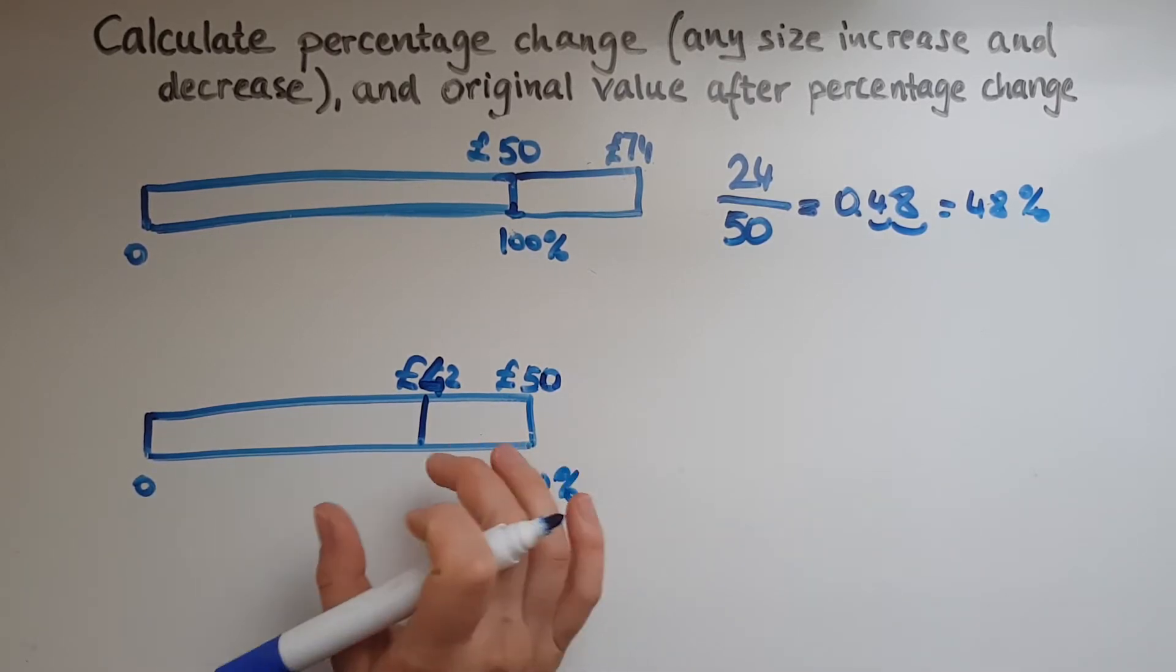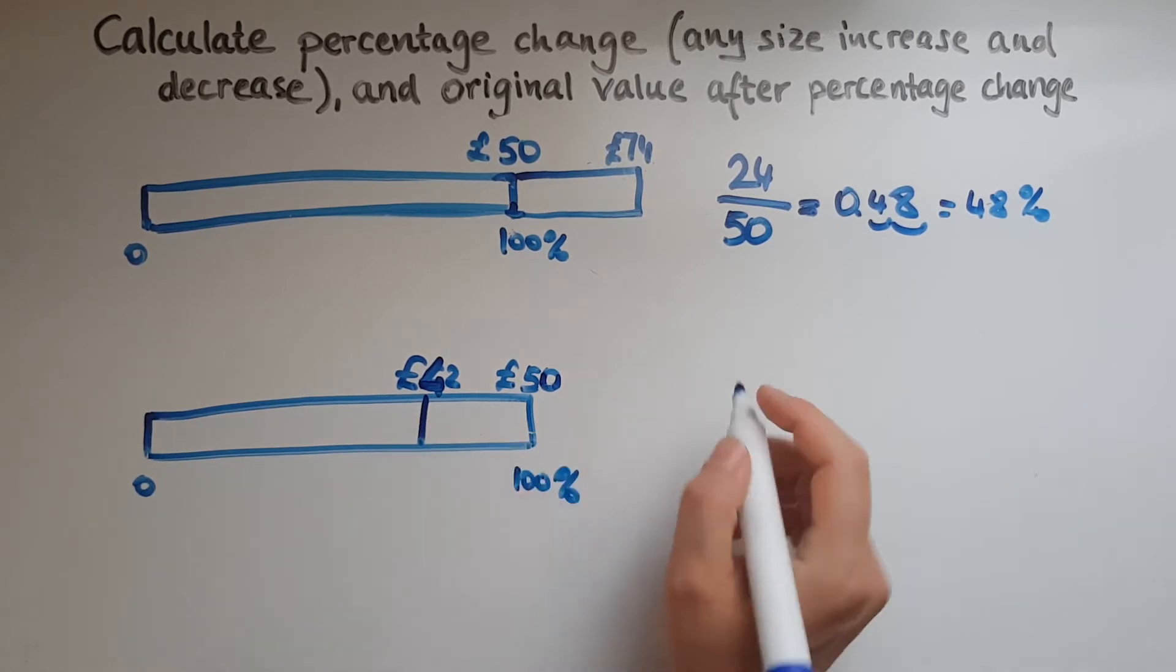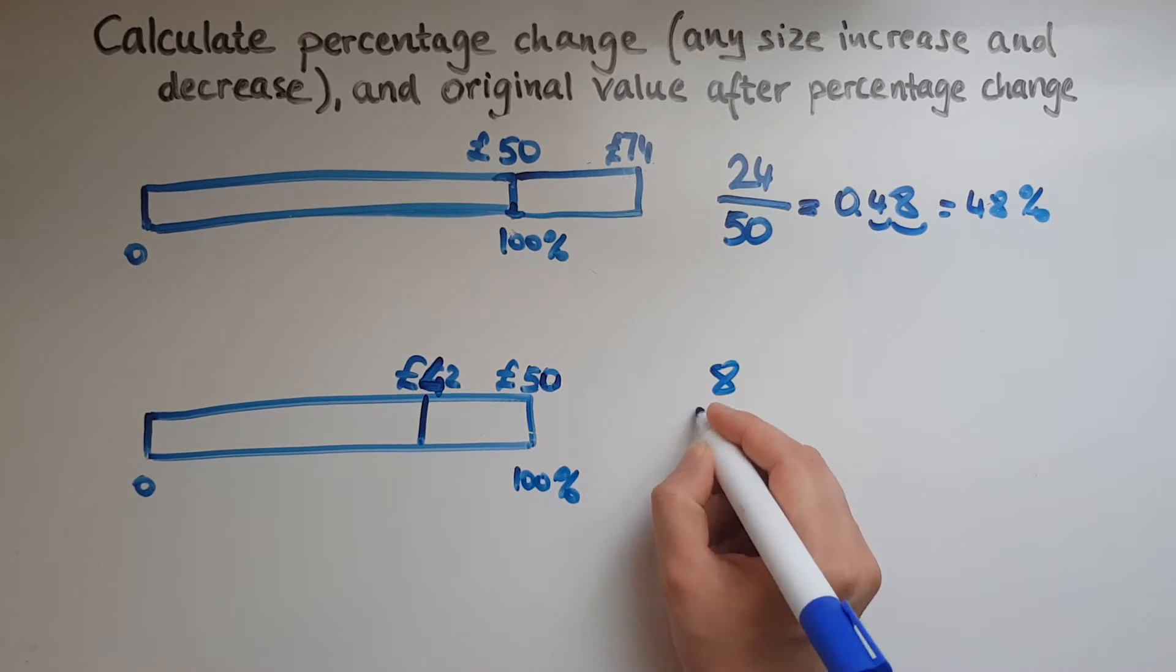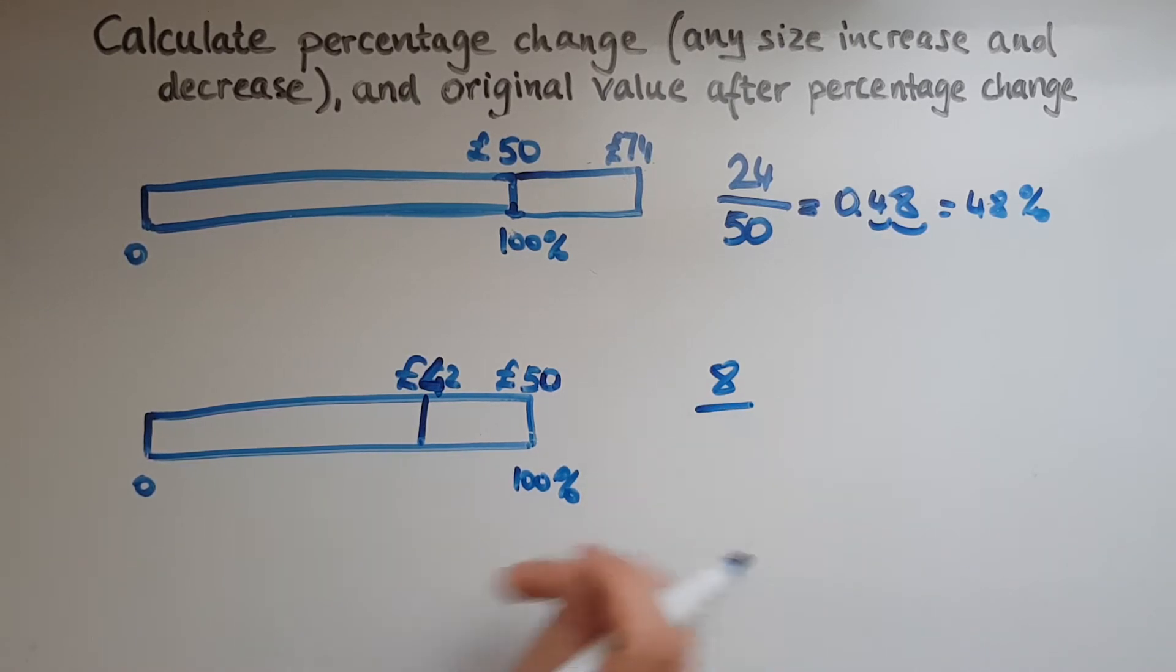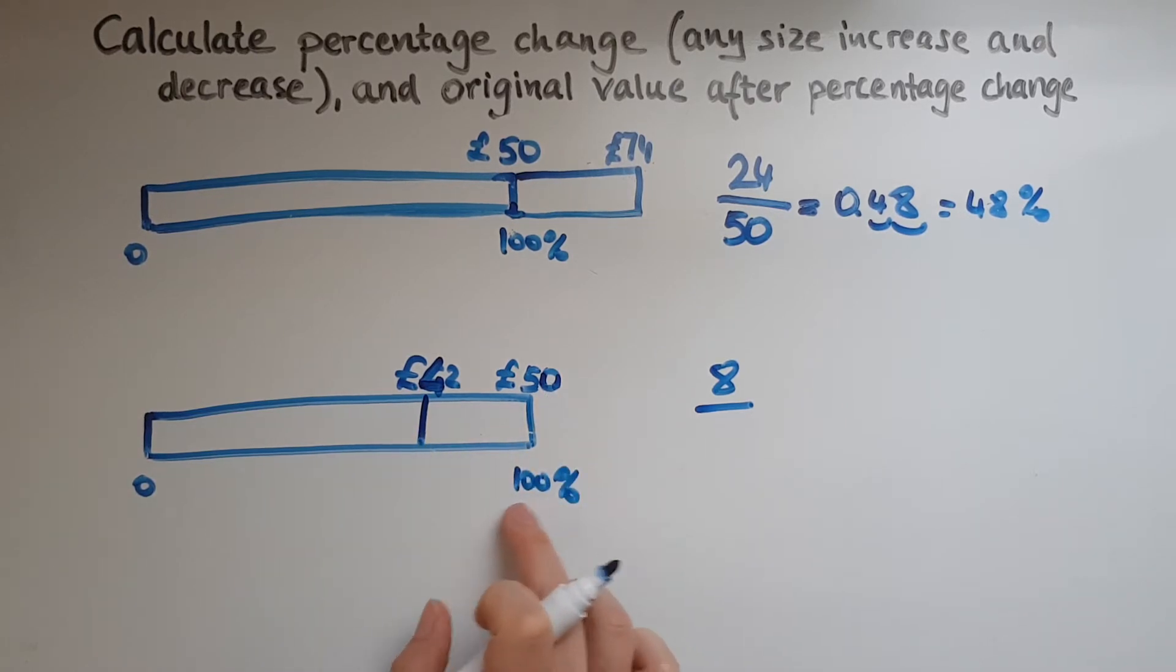We see it's changed, it's gone down. How much has it gone down by? It's gone by 8 pounds. Now 8 pounds, we're trying to work out what is this as a percentage of the 50.